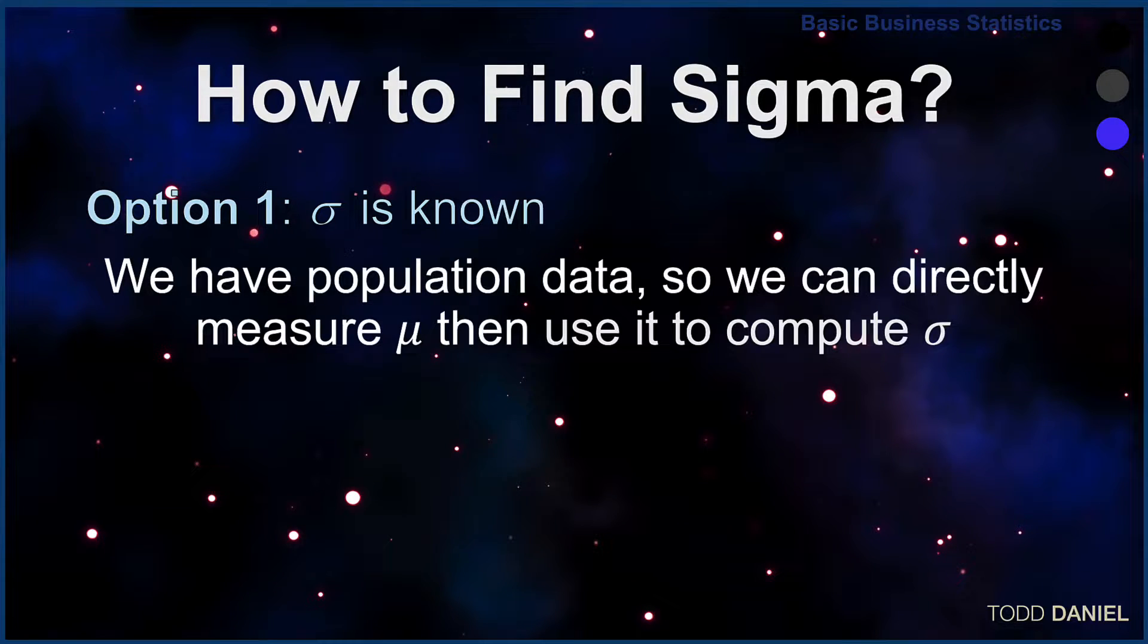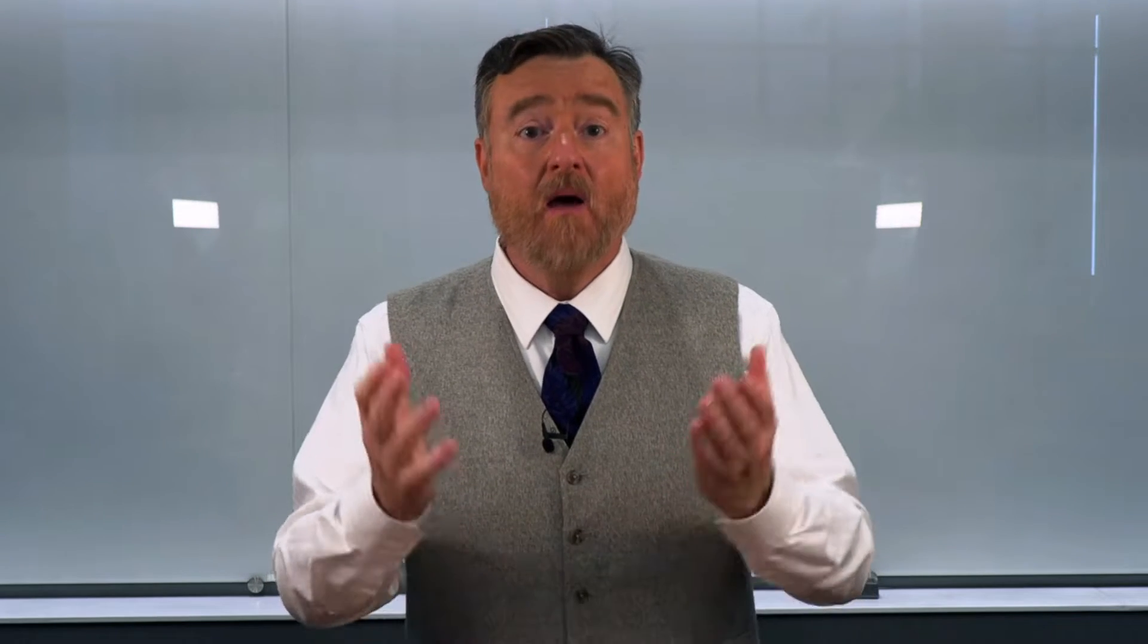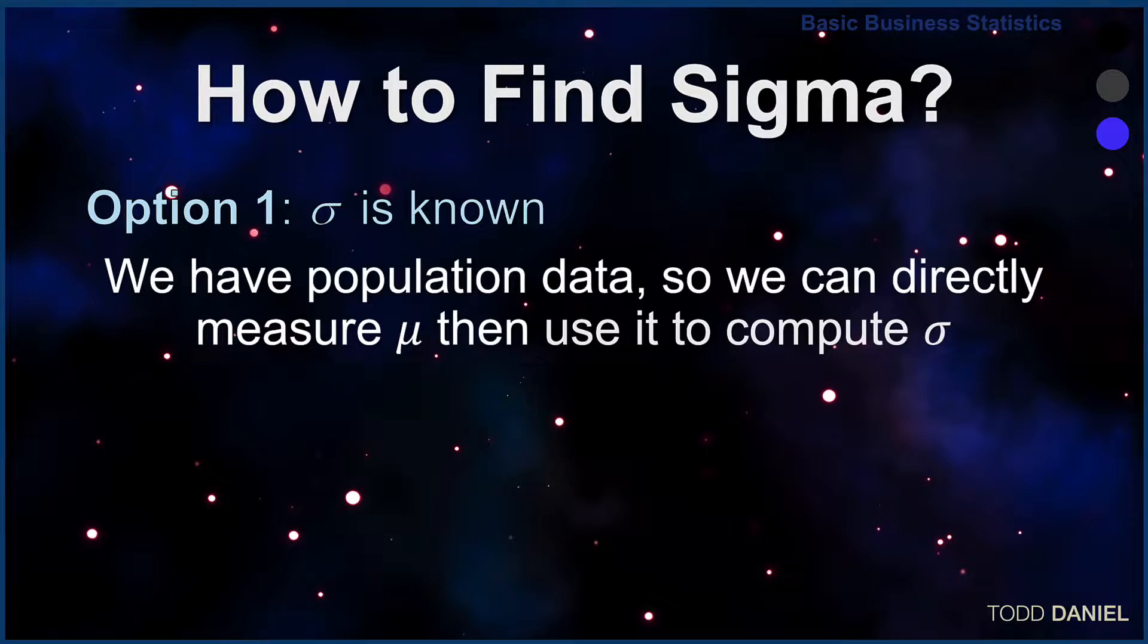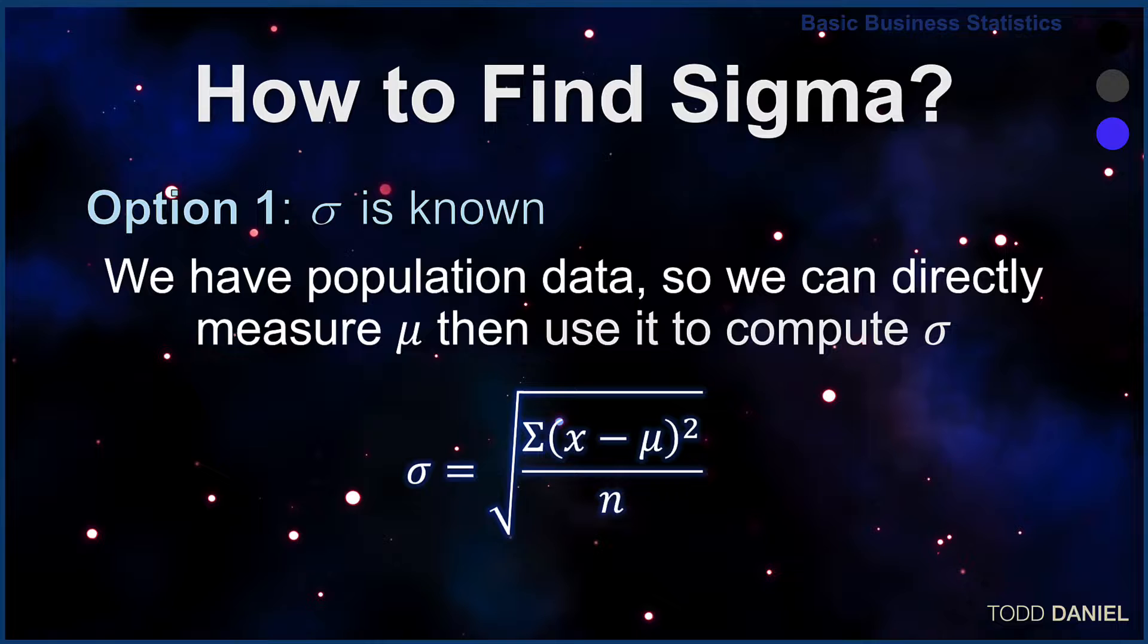We will call this option 1, in which sigma is known. And how is sigma known? Because it has been directly calculated from a known population mean. Because we have data about every member of the population, we directly measure the mean of the population, and then we use that mean to calculate the standard deviation of the population.